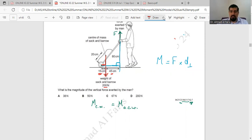So the moment clockwise is the moment caused by whom? The moment caused by the center of the mass of the sack and the barrow, they act clockwise about the pivot, which is the wheel, and the force of the hand acts anticlockwise in this direction.